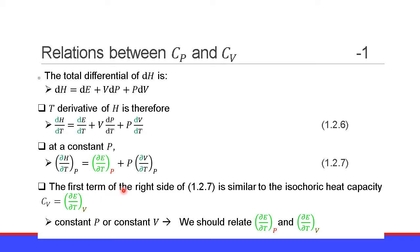The first term on the right side of equation 1.2.7 is similar to the isochoric heat capacity Cv, which is the partial derivative of internal energy E with respect to temperature T at constant volume V. The difference is whether we are at constant volume or constant pressure. Therefore, we need to relate the partial derivative of internal energy with respect to temperature at constant pressure P to that at constant volume V.